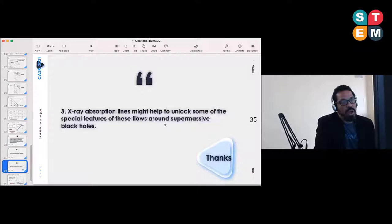I believe this is the last one: X-ray absorption lines might help to unlock some of the special features of this flow around supermassive black holes, since you are going to be able to resolve fine absorption lines coming from atoms very close to the system. If you do it well, then you are going to be able to extract fundamental properties like accretion rate, velocities involved or related, and even deviation from pure gravitational solutions.